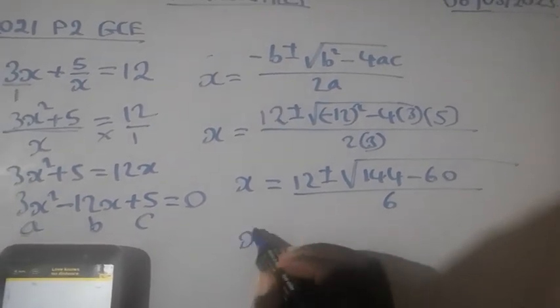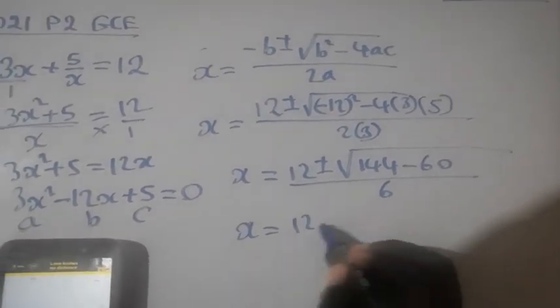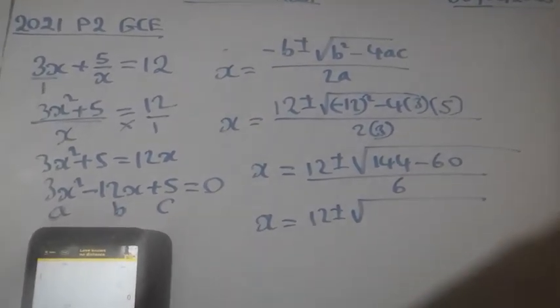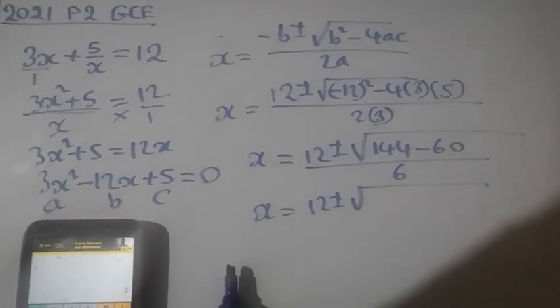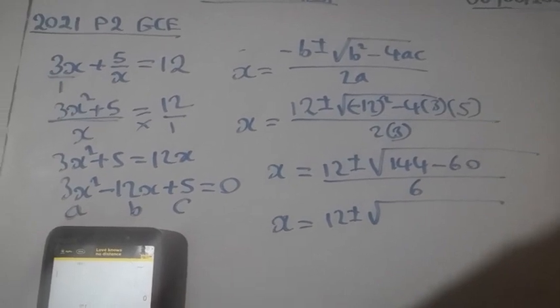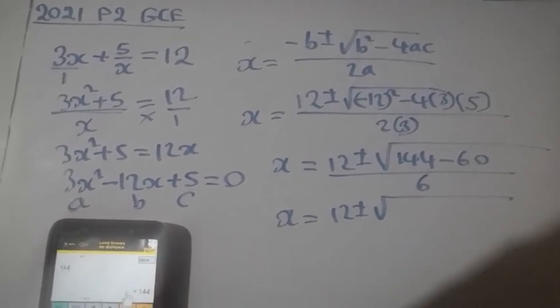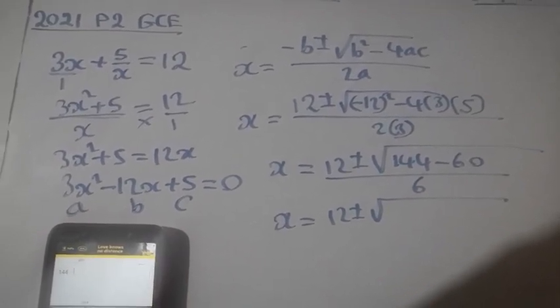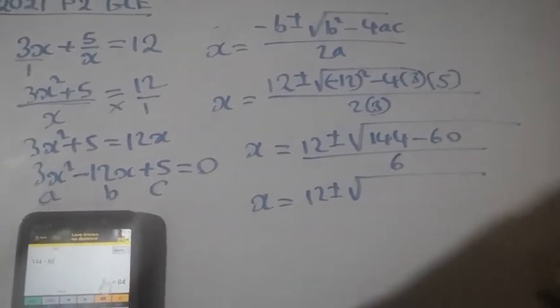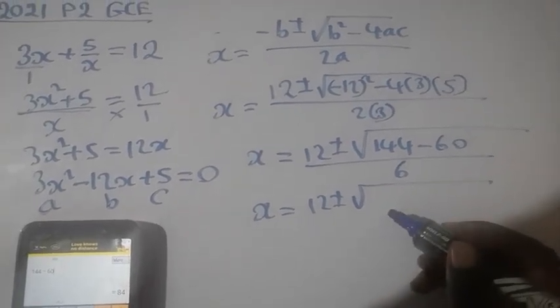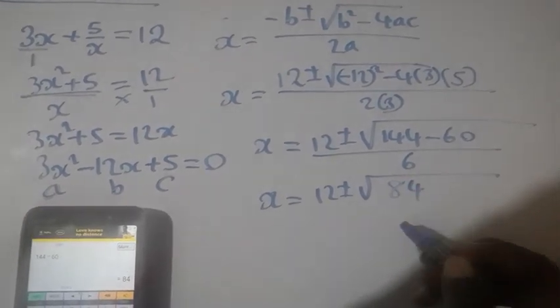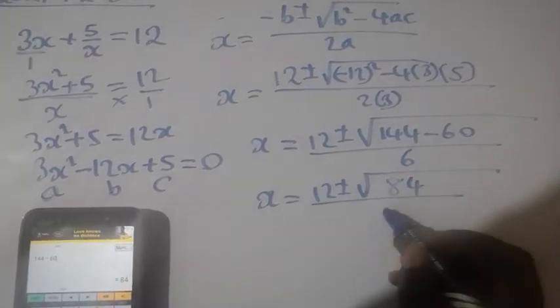So now this one will be x equal to positive 12 plus or minus 144 minus 60. Let me just punch on my calculator, we are getting 84 over 6.